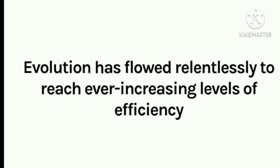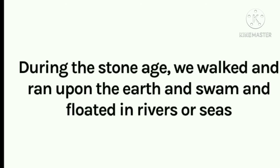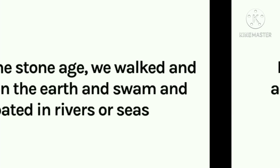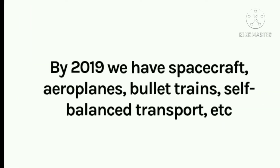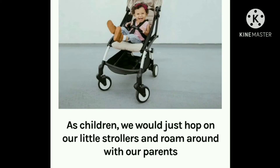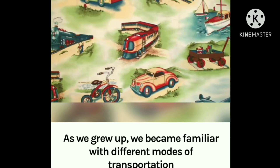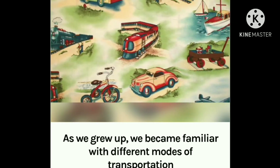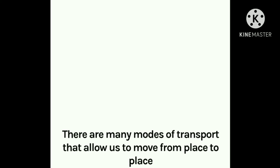During the stone age, we walked and ran upon the earth, and swam and floated in rivers or seas. By 2019, we have spacecraft, aeroplanes, bullet trains, self-balanced transport, and more. Children are dependent on parents to carry them before they start walking. As children, we hop on our little strollers and roam around. As we grow up, we become familiar with different modes of transportation: bicycles, aeroplanes, trains, two-wheelers, four-wheelers, and boats. These are all modes of transport.